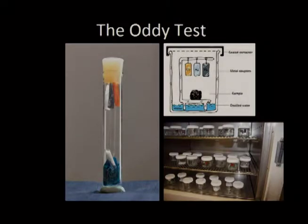Andrew Oddy first introduced an accelerated corrosion test used for evaluating exhibition case materials at the British Museum in 1973. The Auditest, as it is now commonly called, continues to be used by conservators as the primary litmus test for materials used in the display and storage of artworks and cultural heritage materials. Several variations and improvements have been published since, including the one often referred to by Thicket and Lee, initially published in 1996 and since revised in 2004.